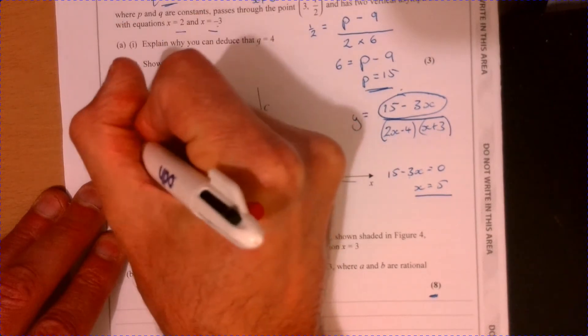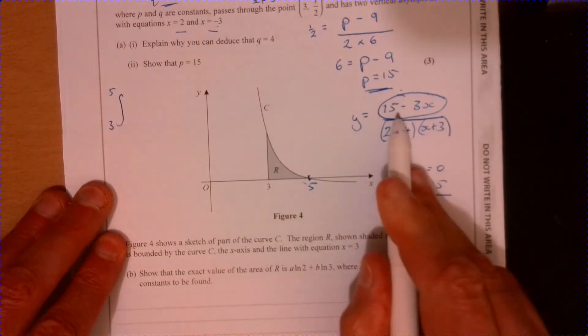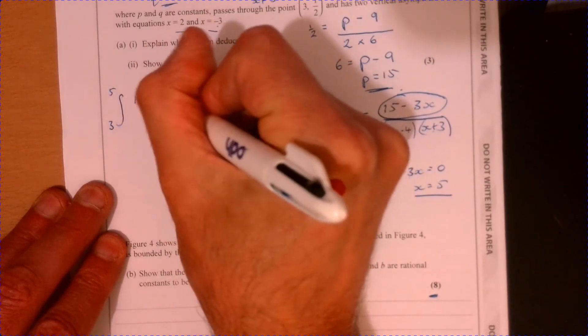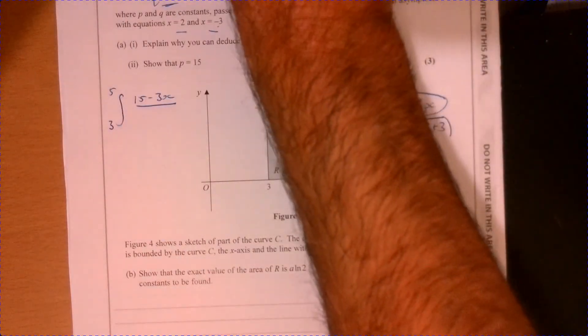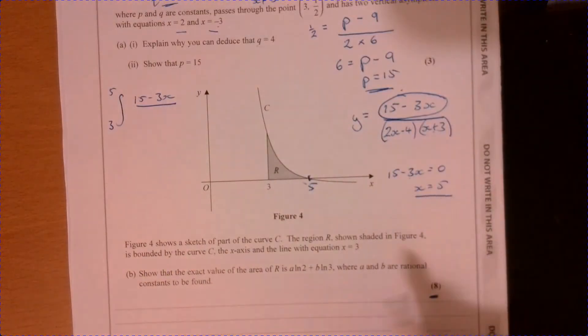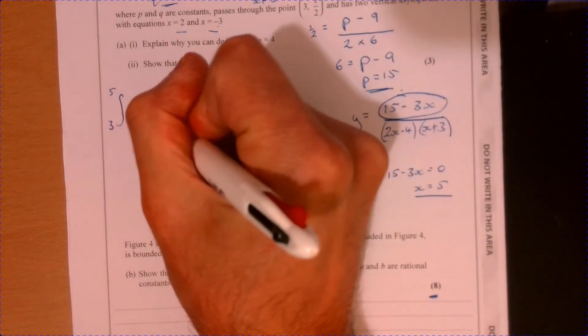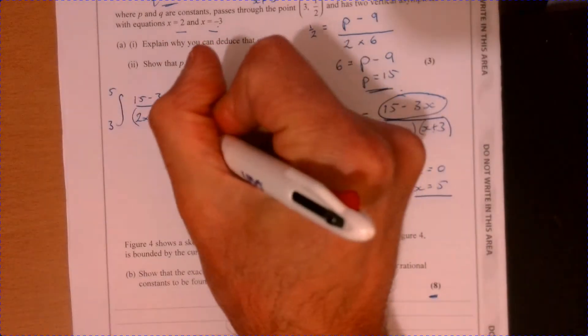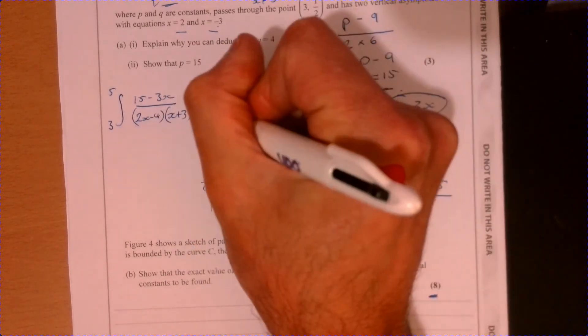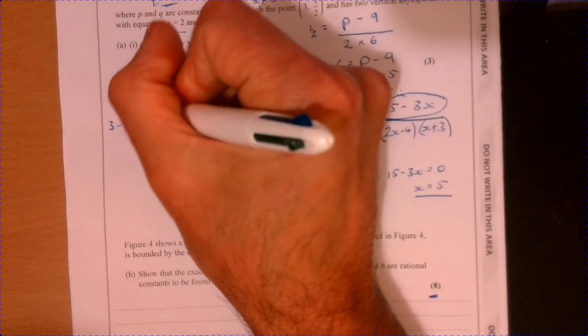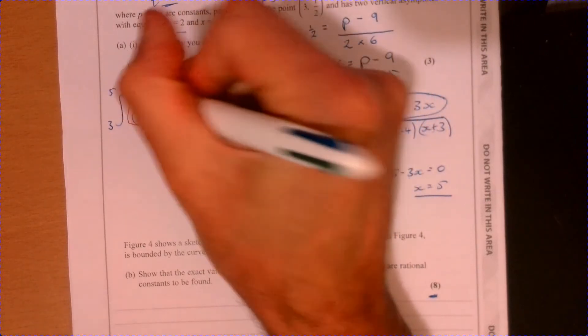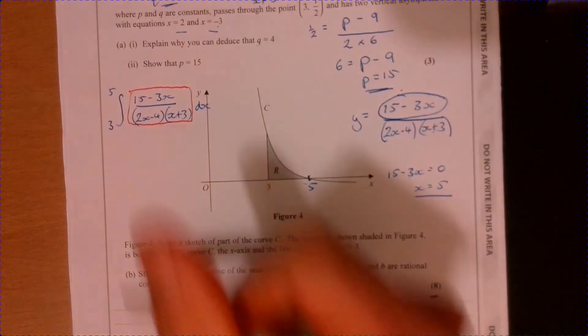So we're going to integrate these limits, and we're going to just work on this here. So clearly, a little bit of work to do. So 2x minus 4, x plus 3. There we go, we're going to do that. Now, in order to do this, you've got a spot. Well, that's horrible to integrate unless we use partial fractions.